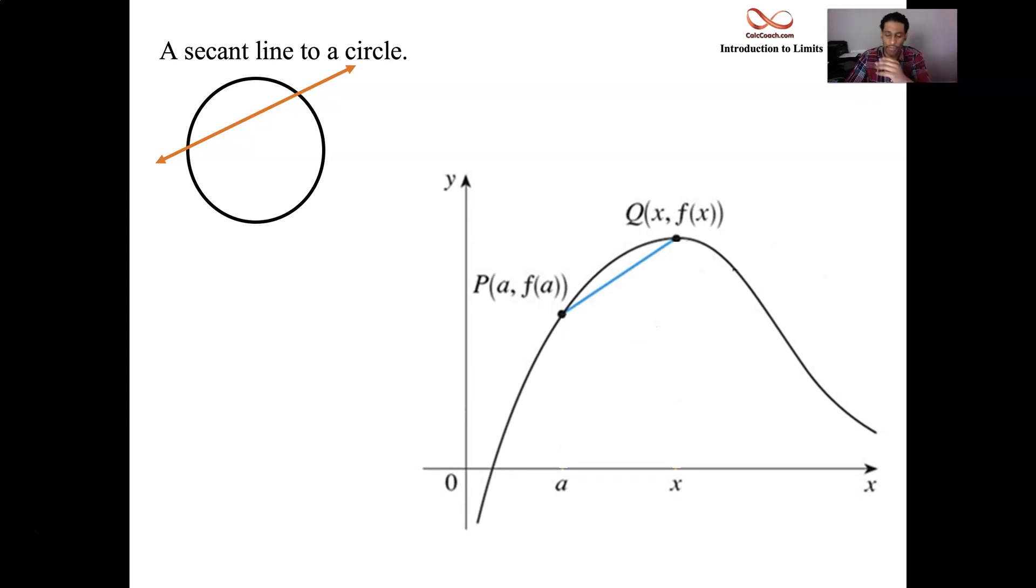All right, so now let's go back to the graph of a function. Let's connect two points. The connection of those two points is called the secant line to the function on that interval.